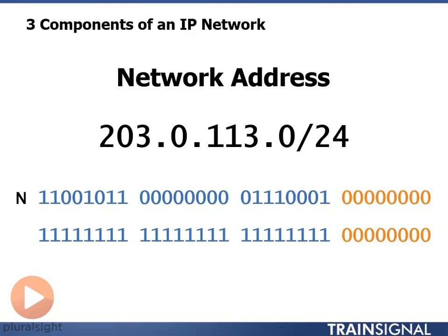There are three components of an IP network. In order to have an IP network, there are three basic addresses involved in that.